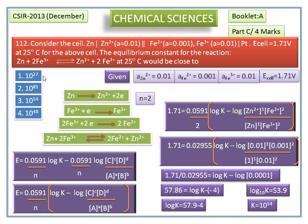Now we check the answer. The given options show the third option having 10 to the power of 54. So the equilibrium constant for this reaction at 25 degrees Celsius would be close to 10 to the power of 54.